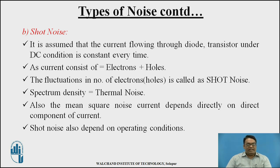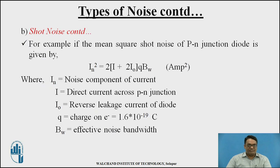Shot noise: we assume that current flowing through a diode or transistor under DC conditions is constant. However, since current consists of electrons and holes, fluctuations in their number give rise to shot noise. The spectral density is similar to that of thermal noise, and the mean square noise current depends directly on the DC component of the current. Shot noise is calculated as IN² = 2(I + 2I₀)Q·BW, where IN is the noise component, I is direct current, I₀ is reverse leakage current, Q is the charge, and BW is the effective noise bandwidth.